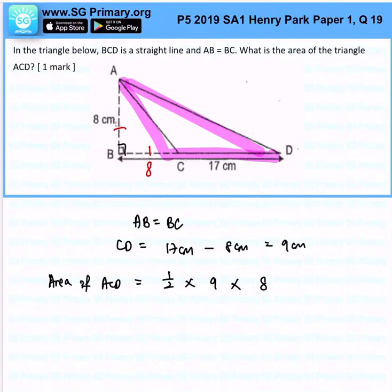The perpendicular height is 8cm from the base, and all together you will get 36cm squared as the answer.